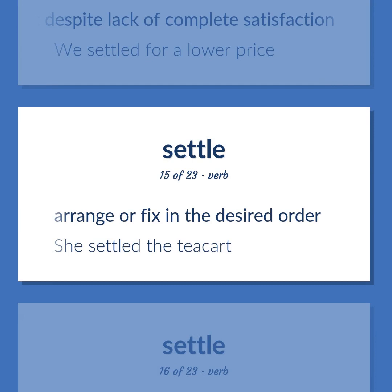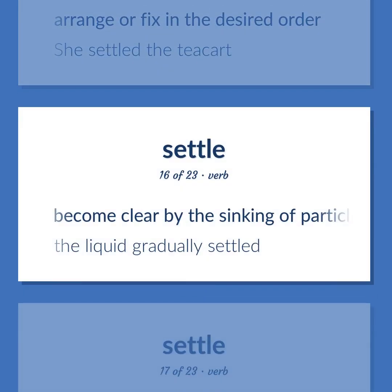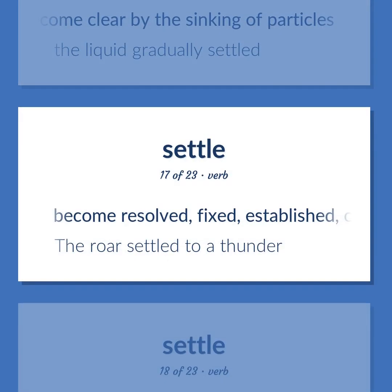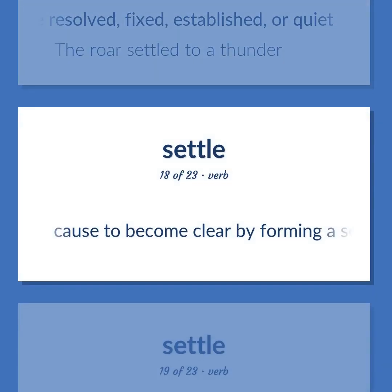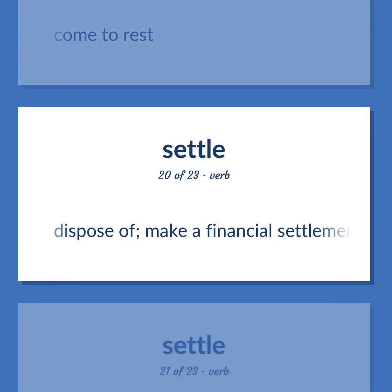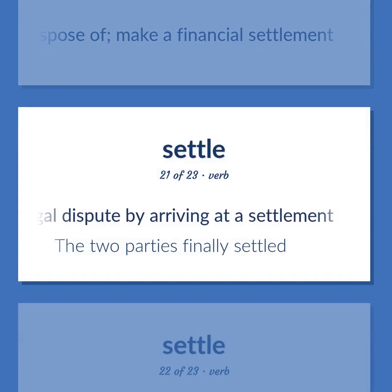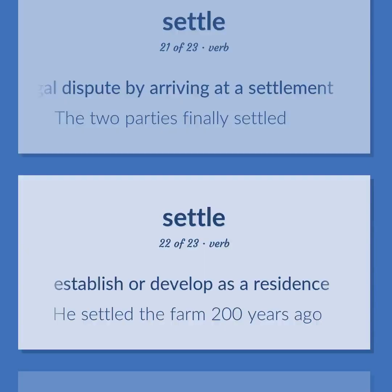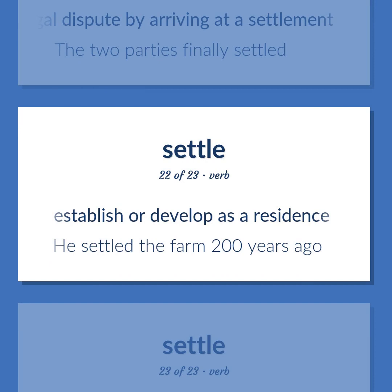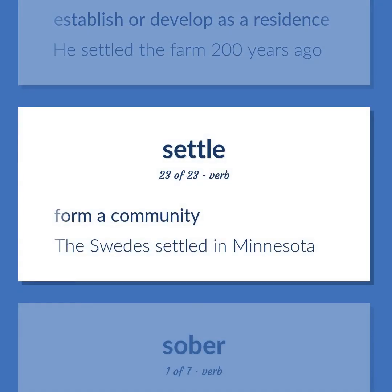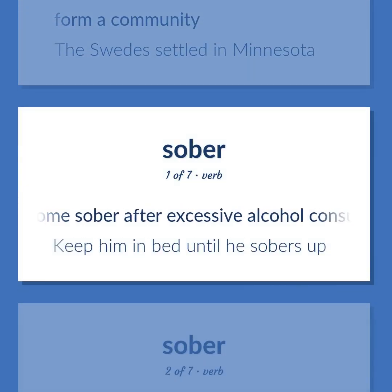Arrange or fix in the desired order. She settled the tea cart. Become clear by the sinking of particles. The liquid gradually settled. Become resolved, fixed, established, or quiet. The roar settled to a thunder. Cause to become clear by forming a sediment, of liquids. Come to rest. Dispose of; make a financial settlement. End a legal dispute by arriving at a settlement. The two parties finally settled. Establish or develop as a residence. He settled the farm 200 years ago. Form a community. The Swedes settled in Minnesota.